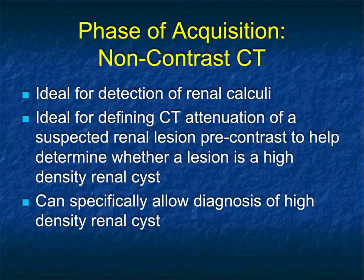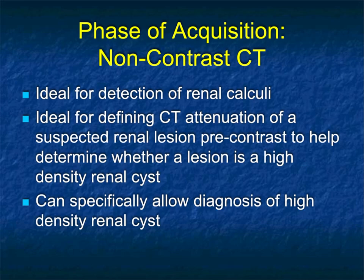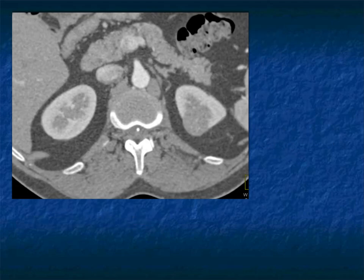Non-contrast scans are good for stone studies and for getting the attenuation of a renal mass. If you have a well-defined renal mass measuring over 70 Hounsfield units, there's a 99% chance it's a benign high-density cyst. You also want to see if lesions are enhancing or not, so non-contrast scans give you that advantage. But do not say a study is negative because a non-contrast CT shows no mass — many times, if a renal mass is small and doesn't bulge the contour, it's easily missed.